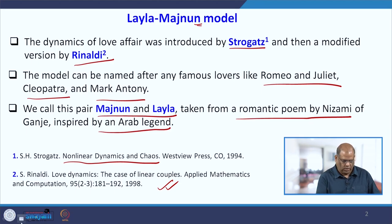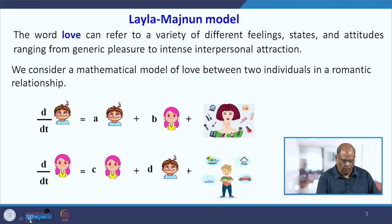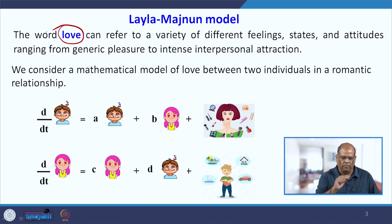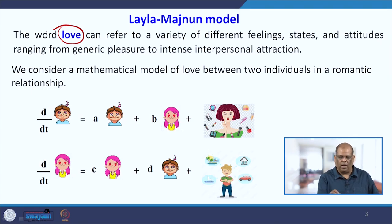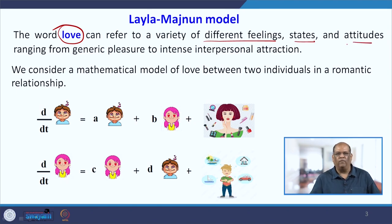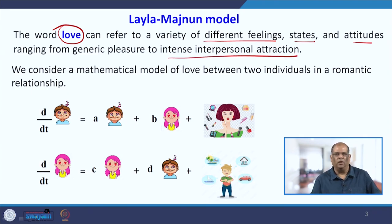So let us look into the model. It is a mathematical model of love affair. How do you define love or explain love? That can be referred to a variety of different feelings, states and attitudes ranging from generic pleasure to intense interpersonal attraction.